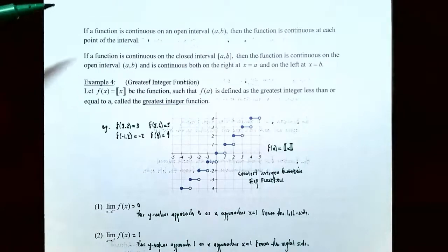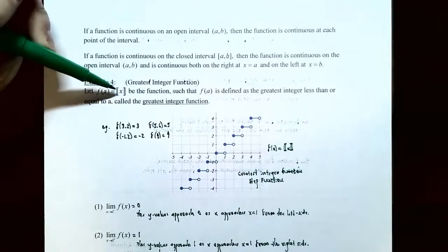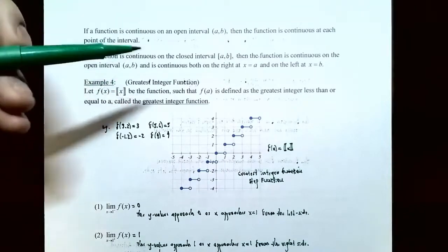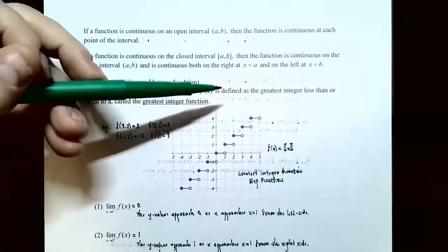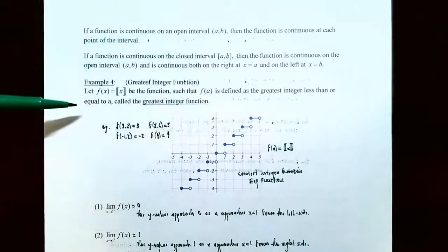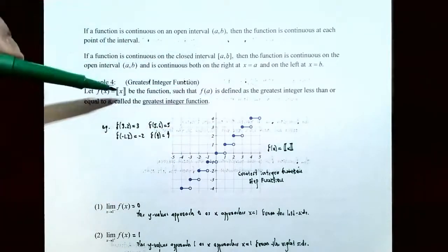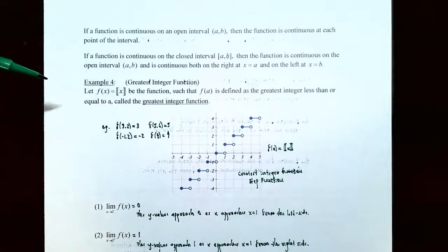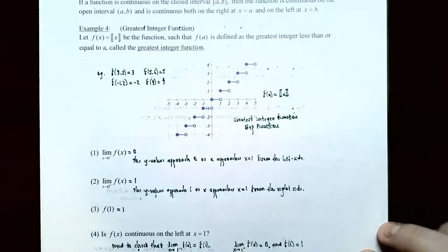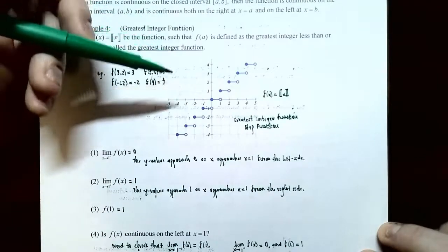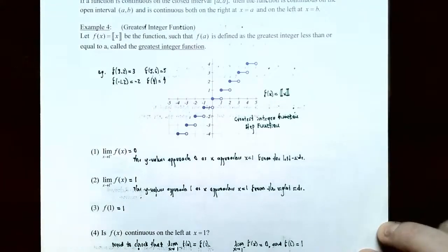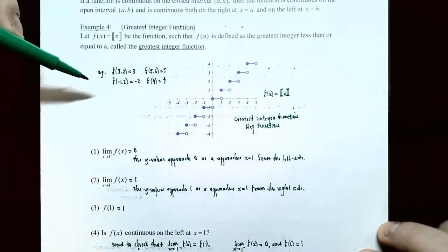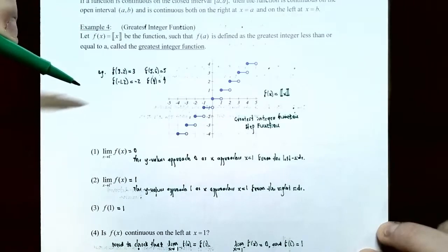Let's look at Example 4: the greatest integer function. Let f(x) equal the double square bracket notation around x, where f(a) is defined as the greatest integer less than or equal to a. Whatever you're plugging in for x, it's the greatest integer that's less than or equal to that value. This is called a step function because the graph forms steps.